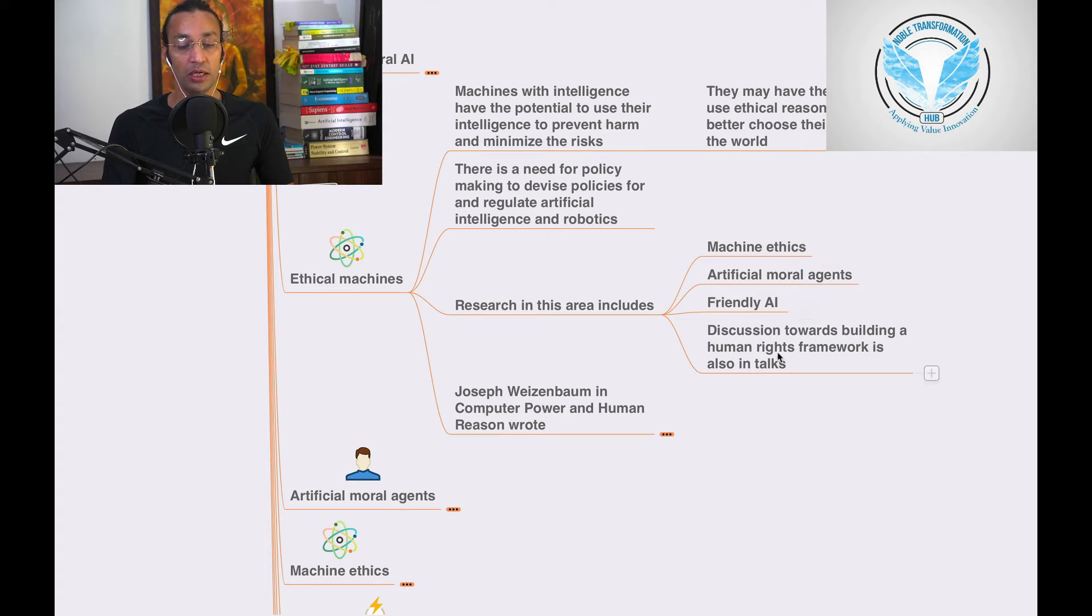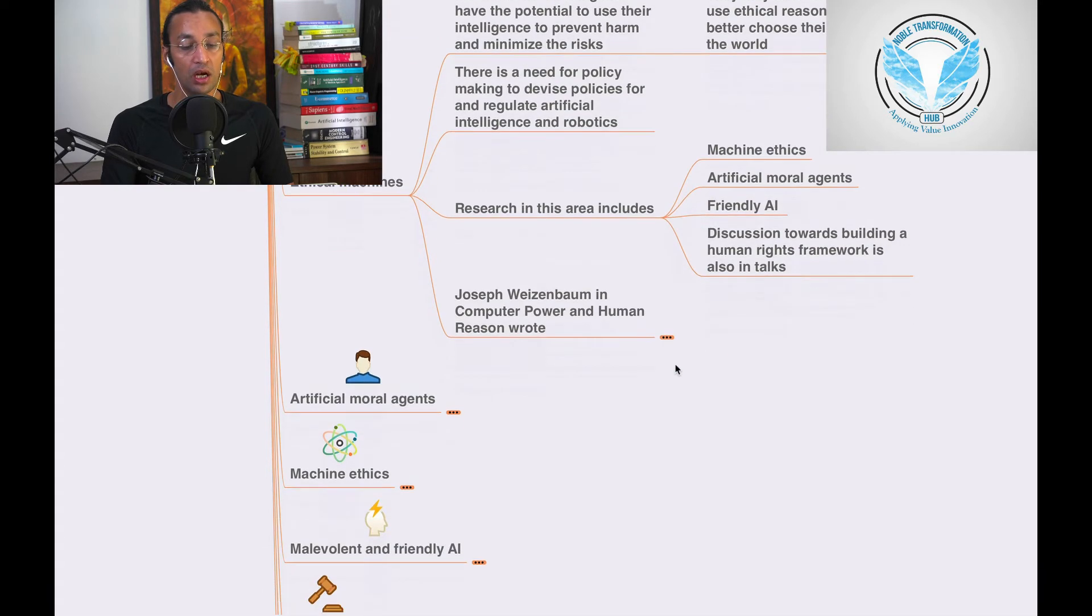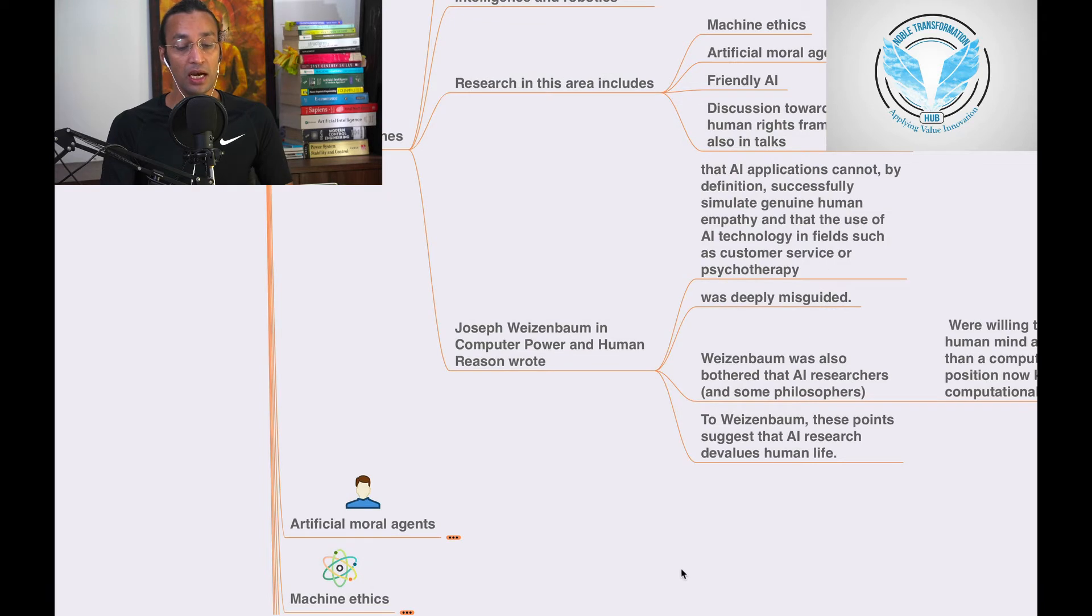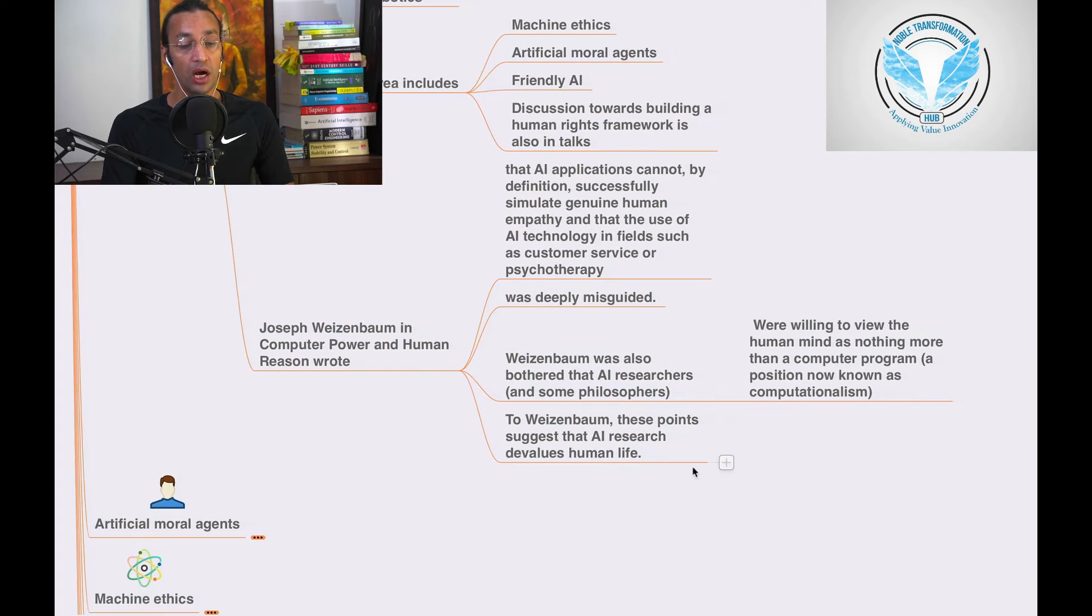Discussion towards building a human rights framework is also underway. Joseph Weizenbaum in Computer Power and Human Reason wrote that AI applications cannot, by definition, successfully simulate genuine human empathy.